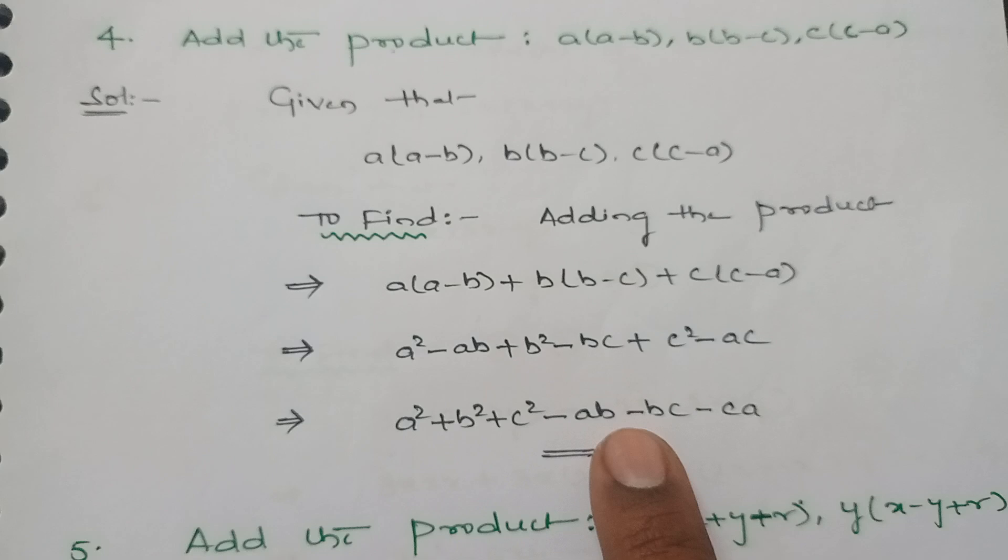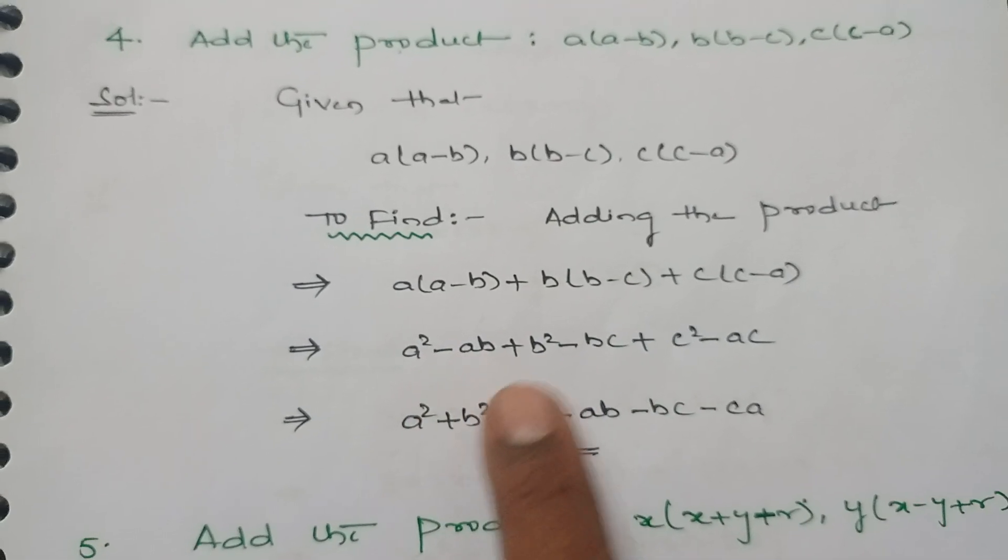And the normal terms on the other side. So we get a² - ab + b² - bc + c² - ca.